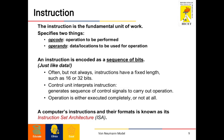Instructions often have a fixed length, such as 16 bits or 32 bits. The control unit interprets the instruction and generates a sequence of control signals to carry out the operation. An operation is either fully executed or not at all — it won't be left in a middle stage. A computer's instructions and their format is also known as instruction set architecture.